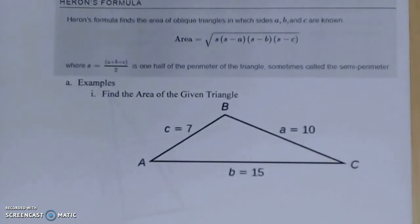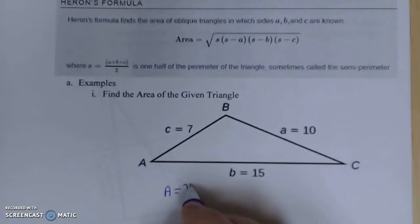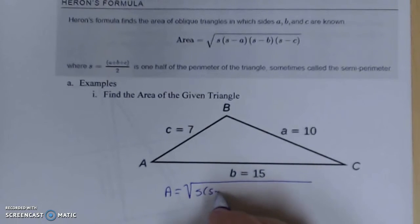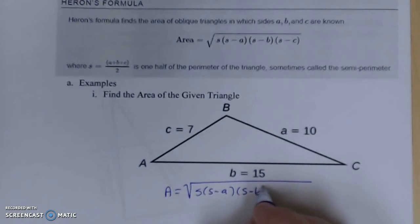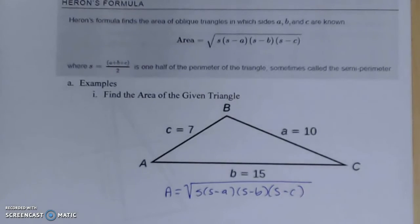Let's work on this example and find the area. The area equals the square root of s times s minus a, times s minus b, times s minus c. The first thing we need to do is find s by adding up all of our sides.